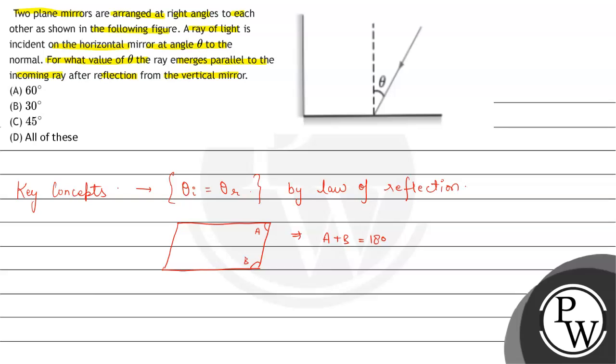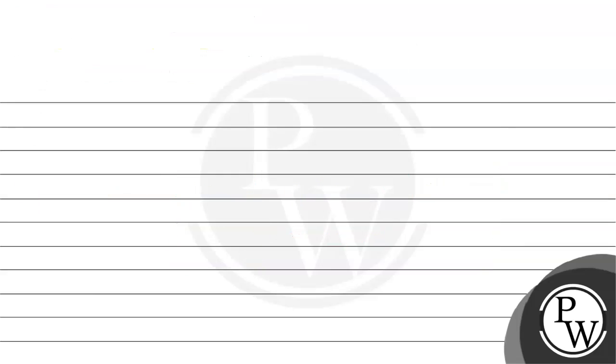For two lines to be parallel, the sum of their adjacent angles must be equal to 180 degrees. Keeping these two key concepts in mind, let us solve our question.